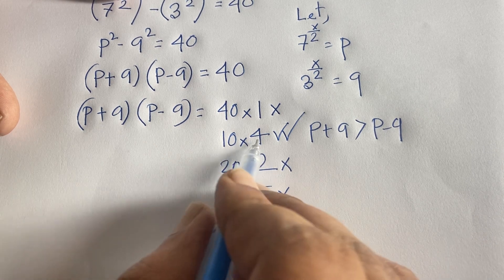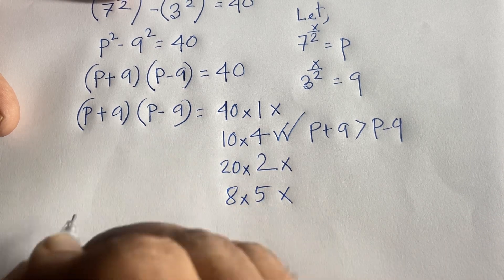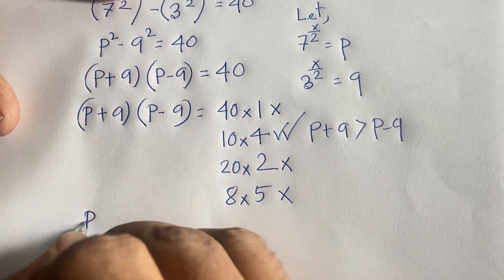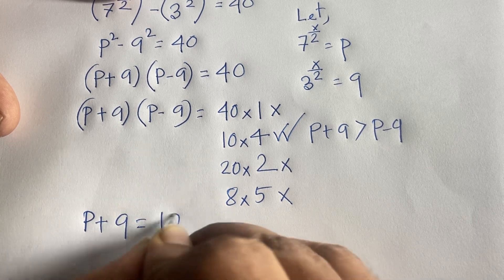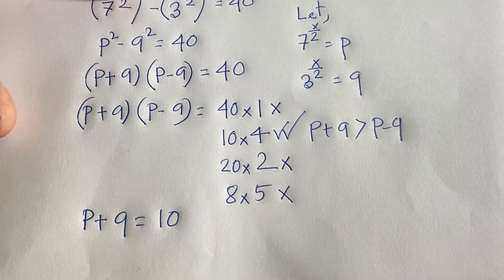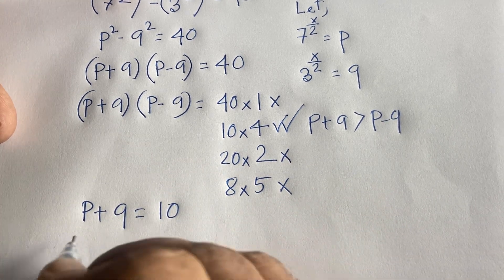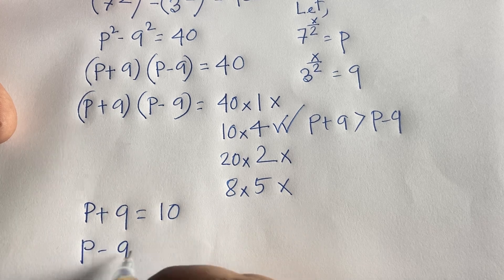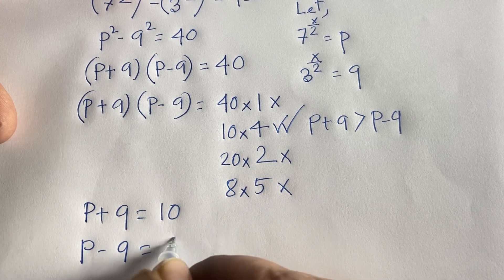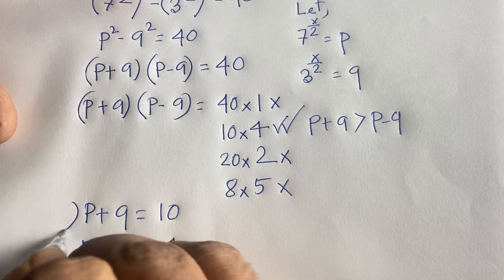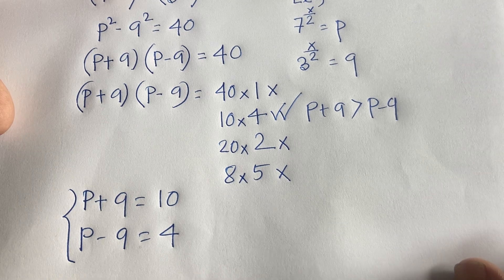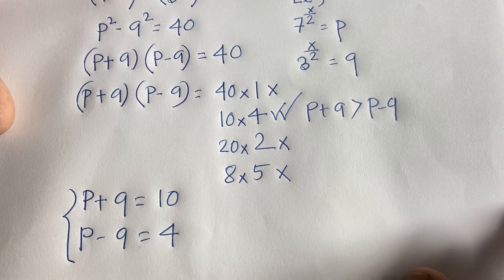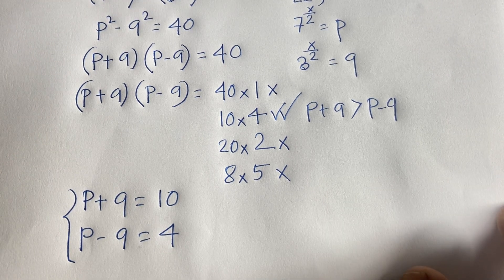Taking the factor pair 10×4, we set p plus q equal to 10 and p minus q equal to 4. Here p and q are positive integers.